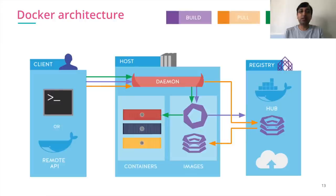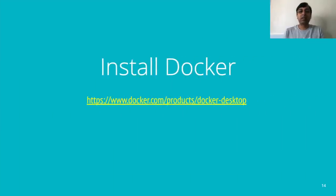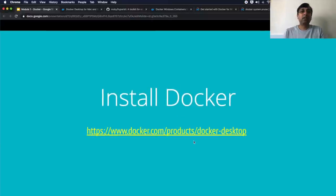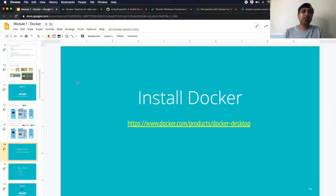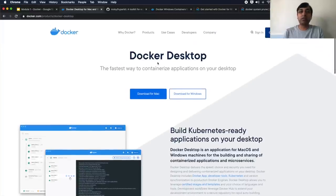So all of this put together: you build an image, pull the image, and run the image — that's how it works. Now let's look at how Docker is set up on the local machine. To install Docker for desktop, you go to the website and install Docker for Mac or Docker for Windows.